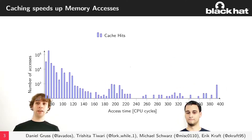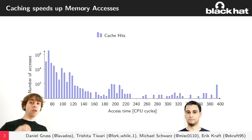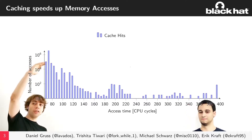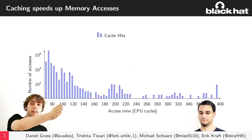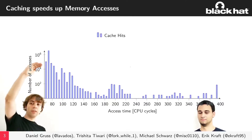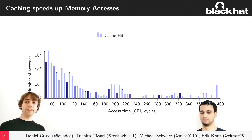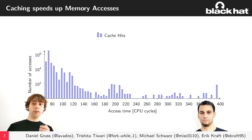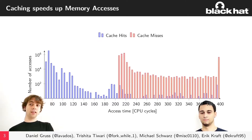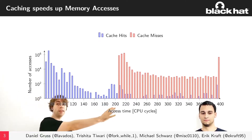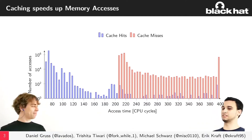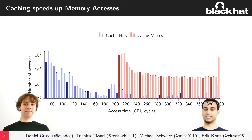Looking at this log-scale histogram, virtually all the cache hits are below 80 CPU cycles. In contrast, the cache misses are always above around 200 cycles. So you can really see, when measuring access times, that it's much faster if something is in the cache.